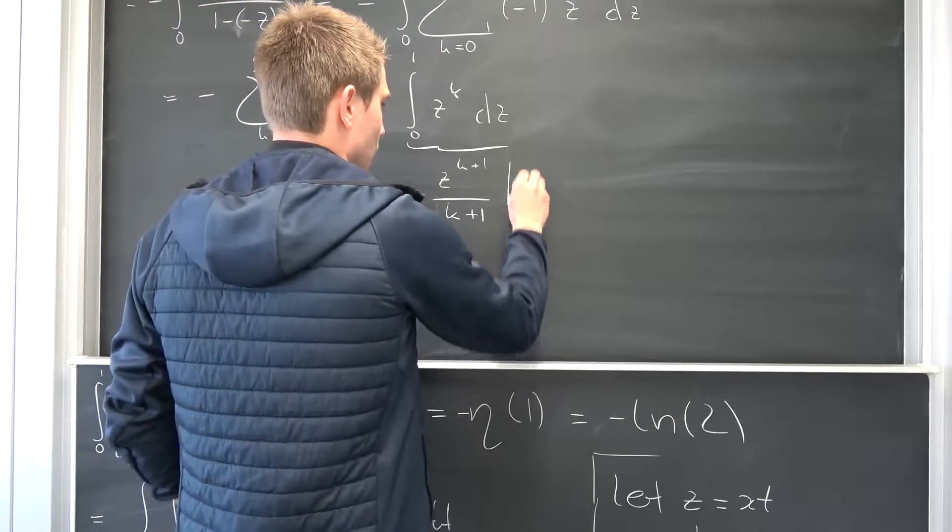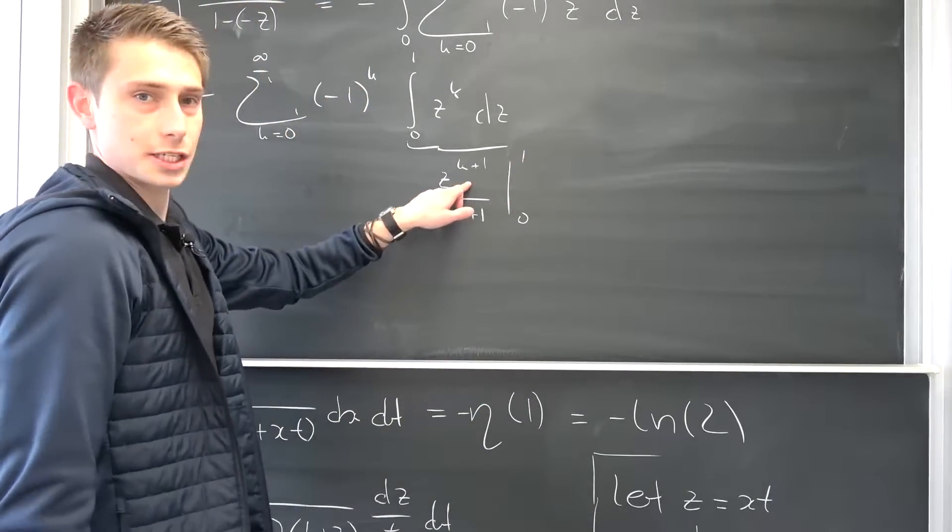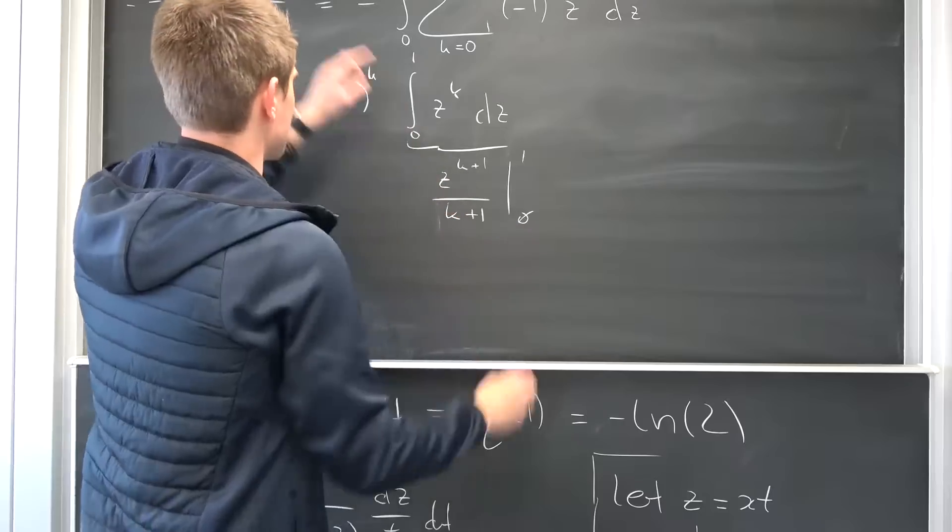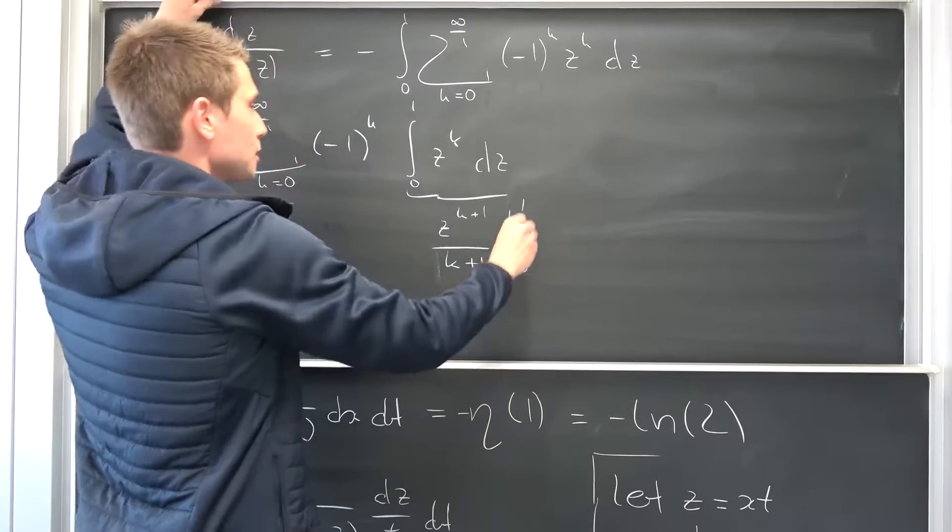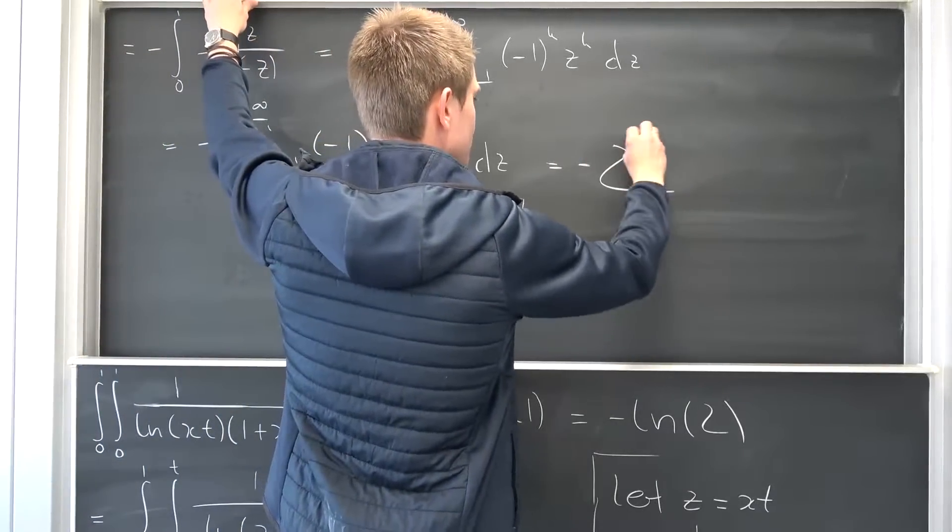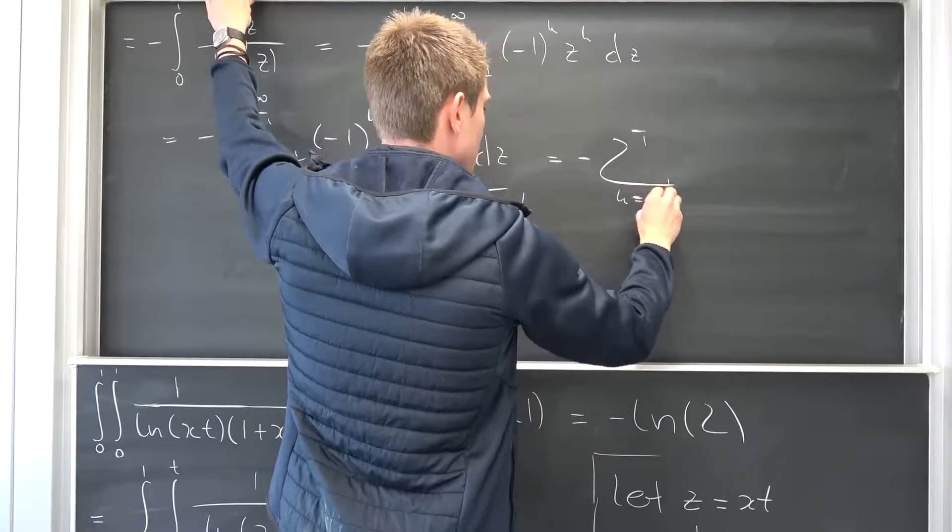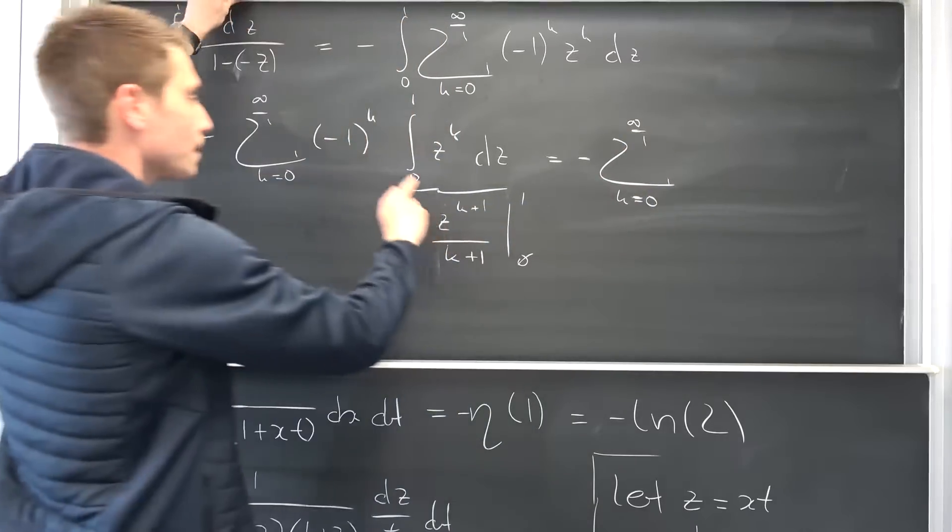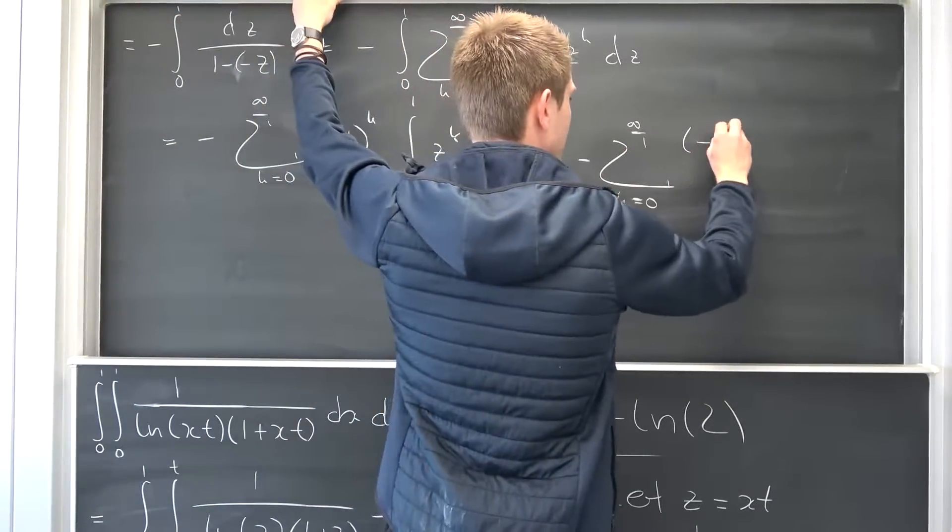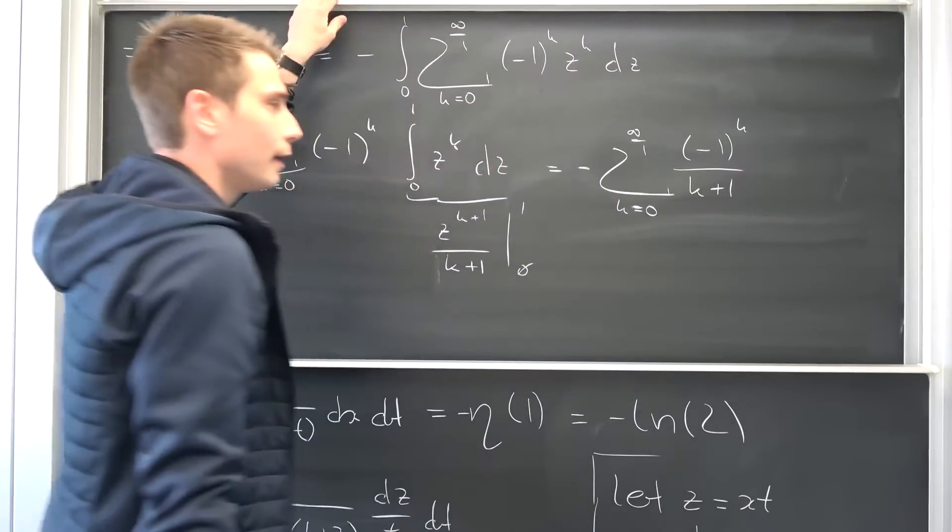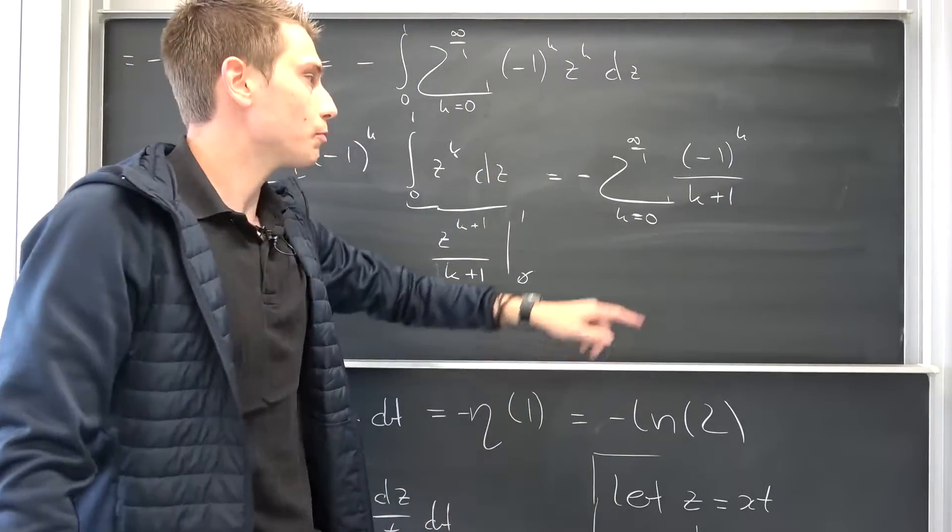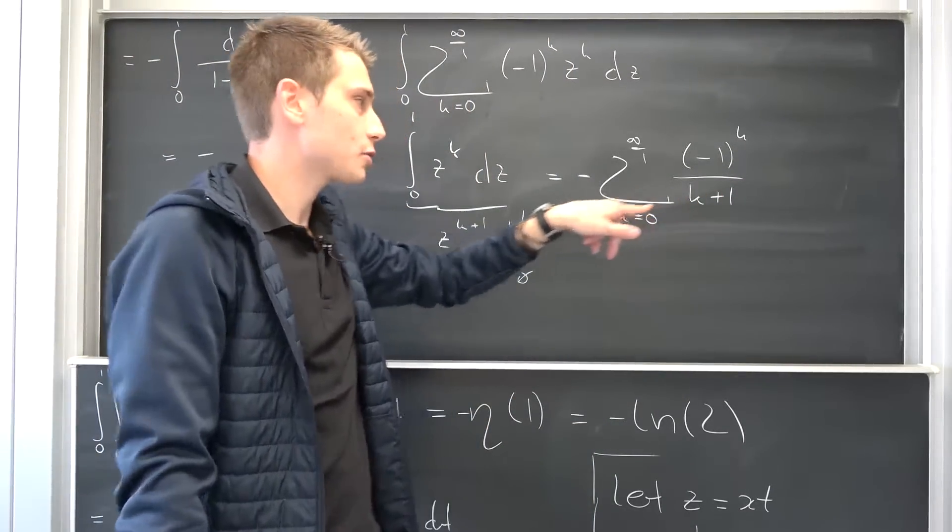On our upper and lower bounds 0 and 1, that's just a polynomial in z. On 0 everything's going to vanish right here. On the 1, 1 to any power is just 1, so this thing is nothing but negative sum running from k being equal to 0 to infinity of negative 1 to the kth power over k plus 1.